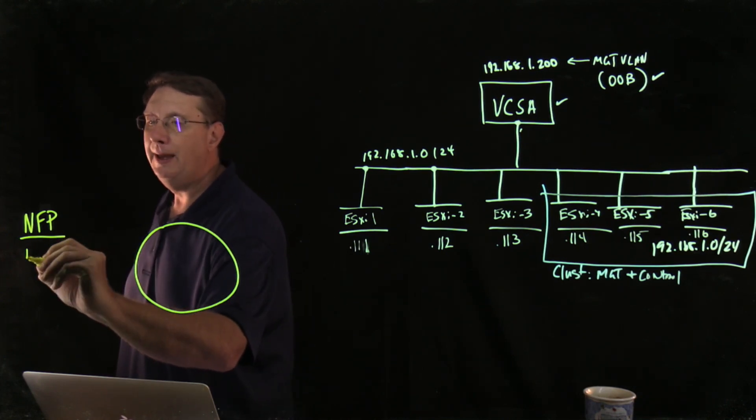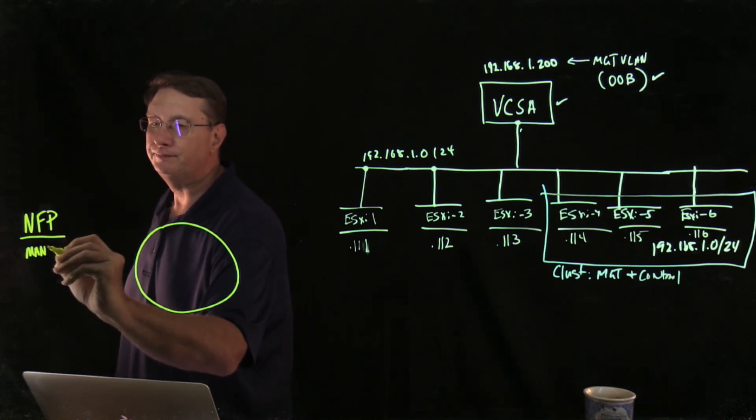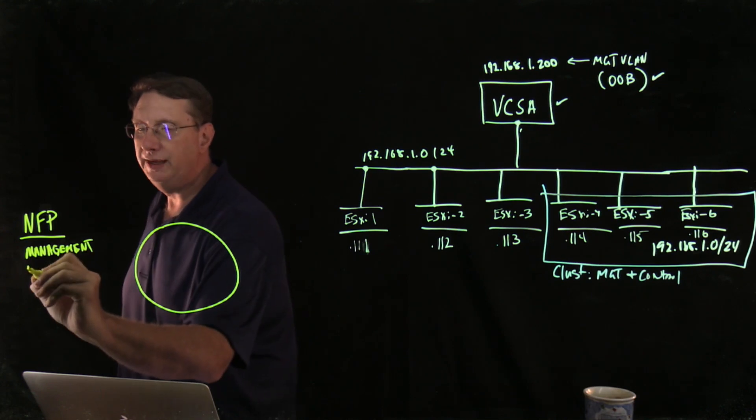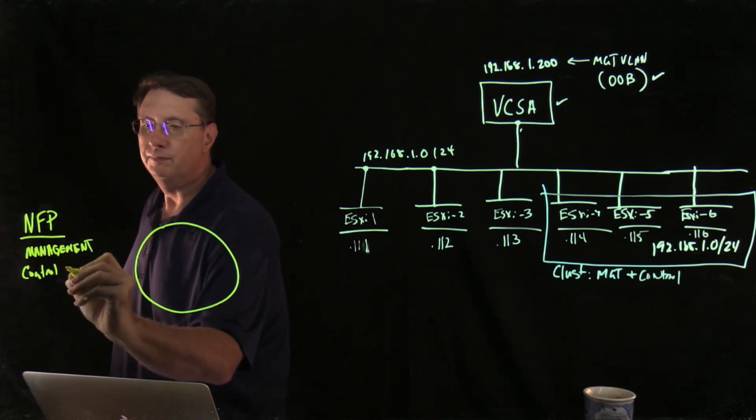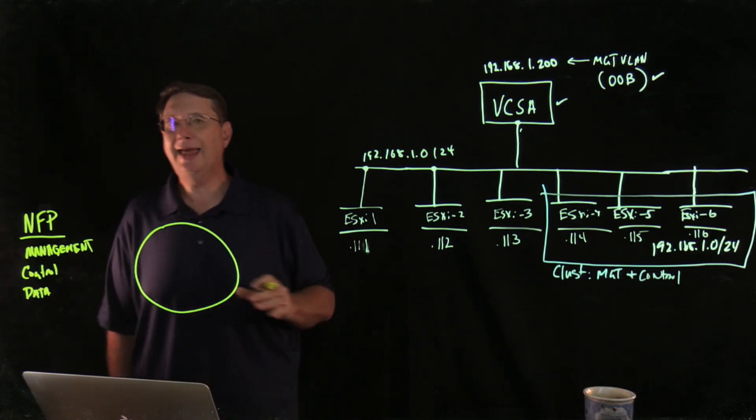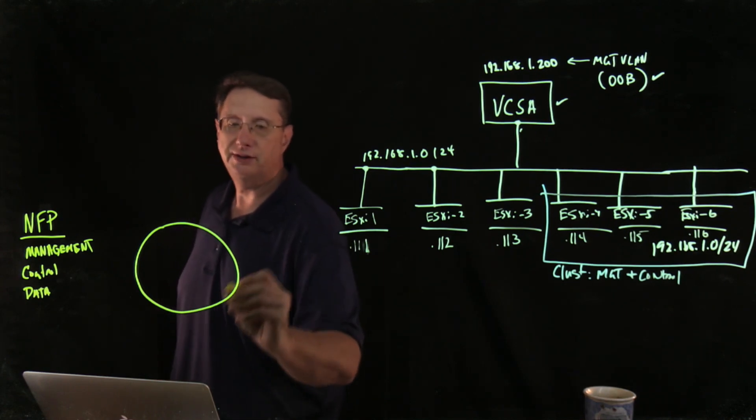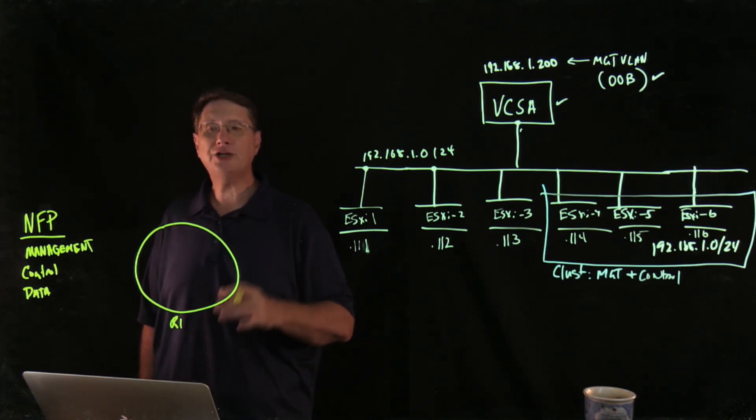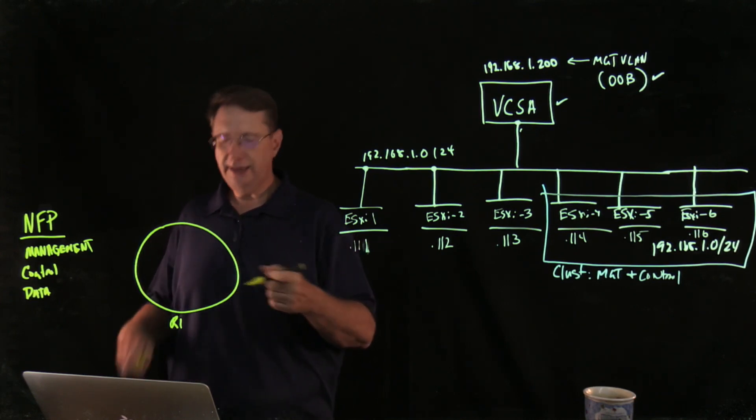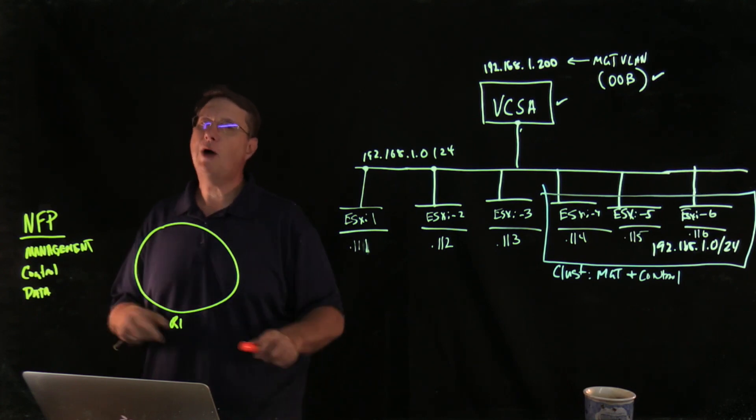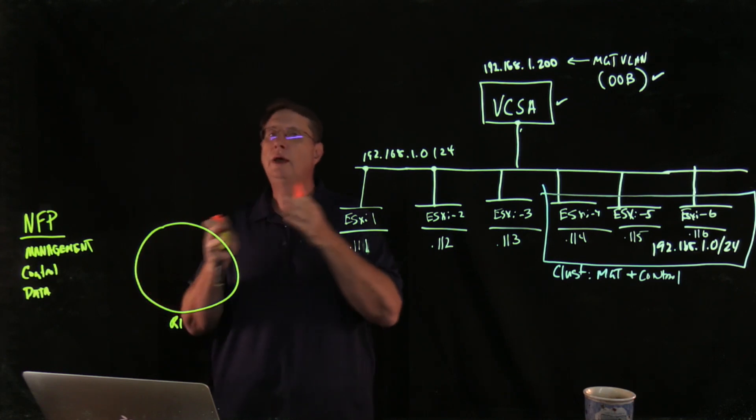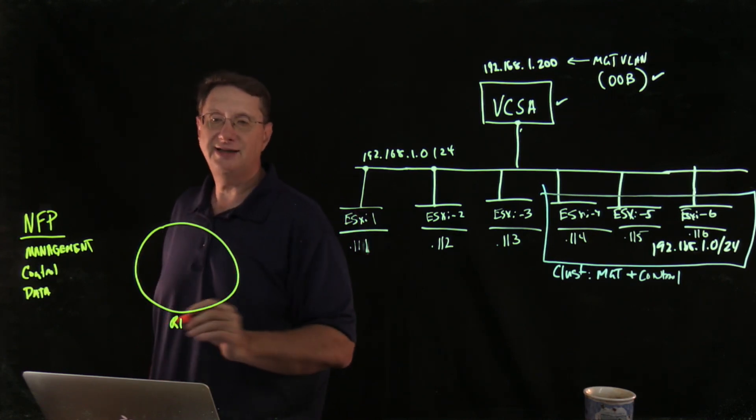We have what is referred to as the management plane. We have what is called the control plane. We have what is referred to as the data plane or the forwarding plane. And devices like routers are actually going to be divided from a logical perspective in such a way that what we do is we actually try to place certain functions and certain capabilities in certain sections that we are going to identify as these planes.